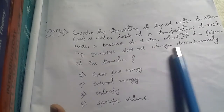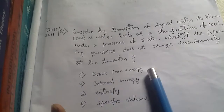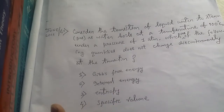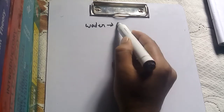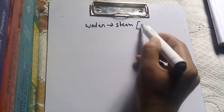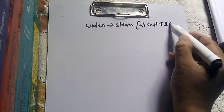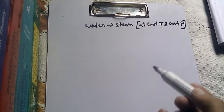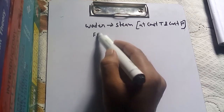Which one does not change discontinuously at the transition? The answer is pretty simple: Gibbs free energy does not change discontinuously. This is because it is a first-order phase transition. Water changing into steam at constant temperature and constant pressure is the first-order phase transition.